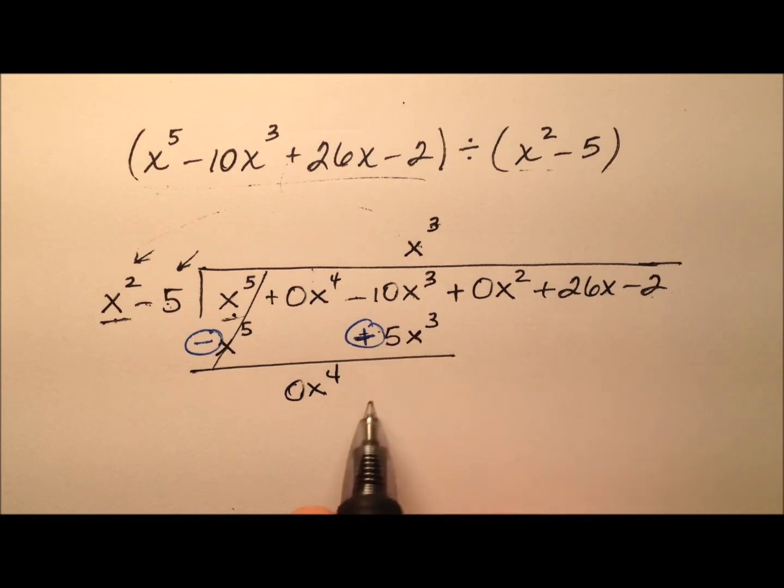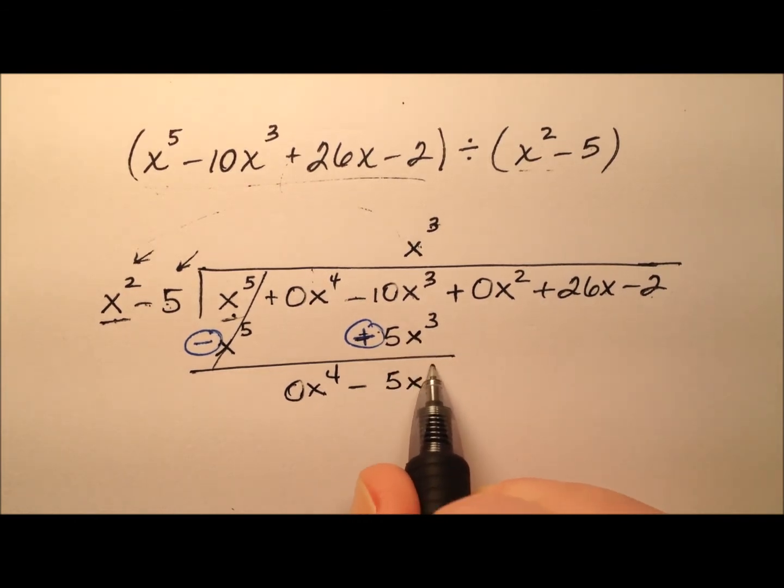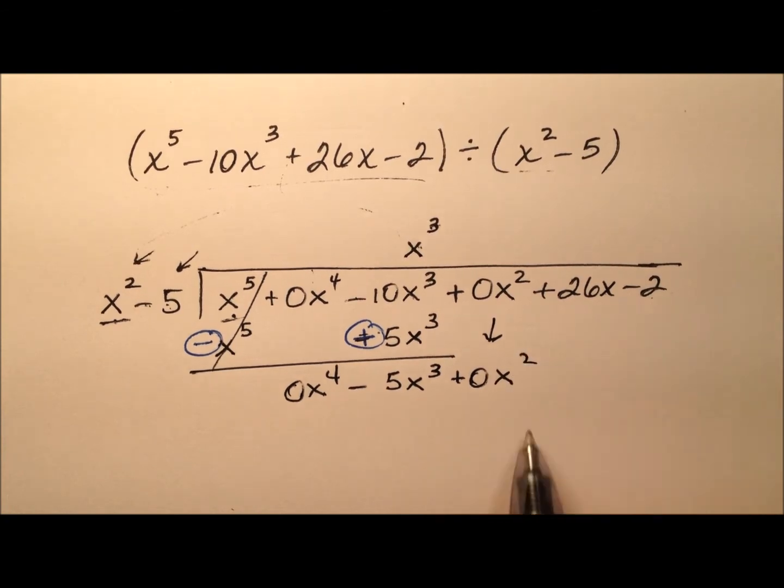This becomes zero x to the fourth and then we have the negative 10 plus 5 is negative 5x cubed and I'll go ahead and bring down my zero x squared.